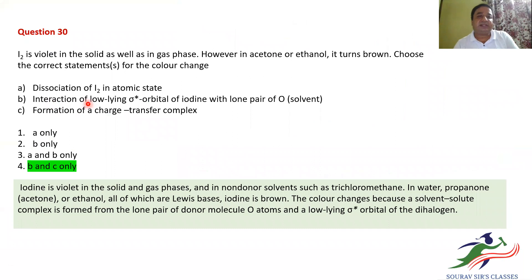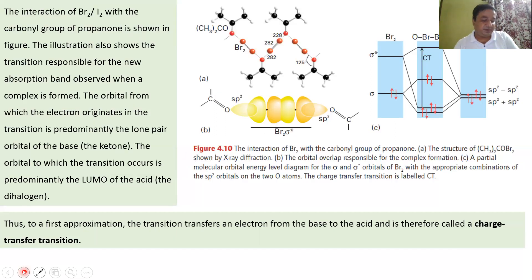So, if you go back now and look at the options, the options were interaction of the low-lying σ* orbital of the iodine with the lone pair, which is true, formation of a charge transfer complex, which is also true. So, that is why the answer is going to be B and C only over here. I hope that explains the query that you had. Thanks for listening. Have a great day.